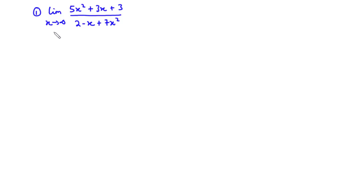This is a rational function — it has a numerator and a denominator, and the denominator is not equal to 0. To find the limit at infinity of this function, the best way is to divide each of the terms by the highest power of x. The highest power of x in this limit is x², so let's divide each term by x².